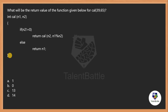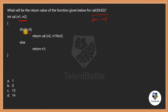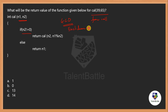Next question: what will be the return value of the function cal(39, 65)? The function accepts two values n1 and n2. If n2 is not equal to 0, it recursively calls itself with parameters (n2, n1 % n2); otherwise it returns n1. This is a recursive function implementing the Euclidean algorithm to calculate the GCD — greatest common divisor — of two numbers.